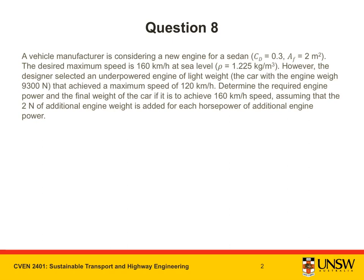A vehicle manufacturer is considering a new engine for a sedan with CD equal to 0.3 and AF equal to 2 m². The desired maximum speed is 160 kilometers per hour at sea level, where ρ equals 1.225 kilograms per meter cubed.